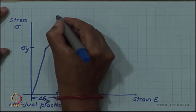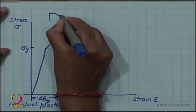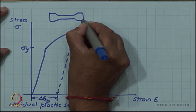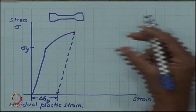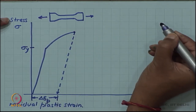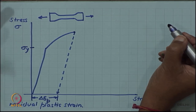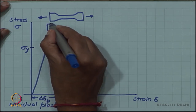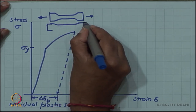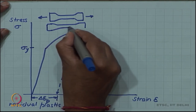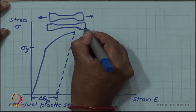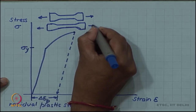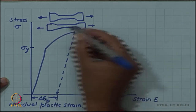So what have we done? We started with a dog-bone kind of specimen for a tensile test. We were pulling this under tension and generating this curve. Although the sample has plastically deformed and is elongated — let me draw the deformed sample — it is slightly longer now and the diameter is also a little bit reduced, but otherwise the sample is still intact. This is the unloaded specimen.